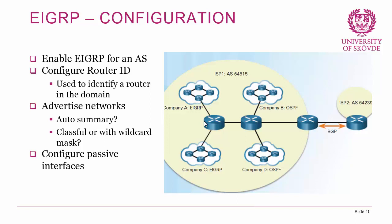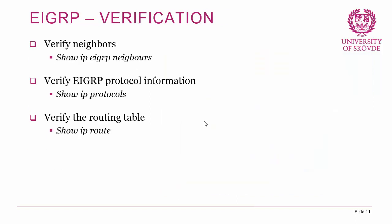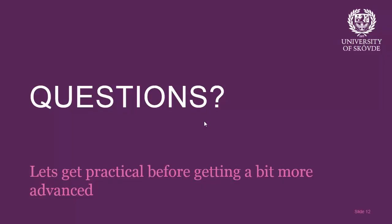Some useful verification commands: 'show ip eigrp neighbors' displays neighbor adjacency information; 'show ip protocols' verifies EIGRP protocol settings and configuration summary; and 'show ip route' displays the routing table. With no questions, let's move on to the practical.